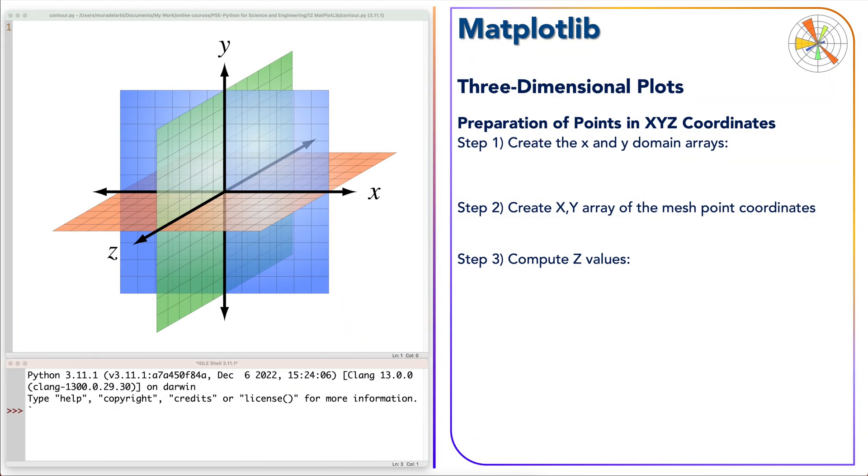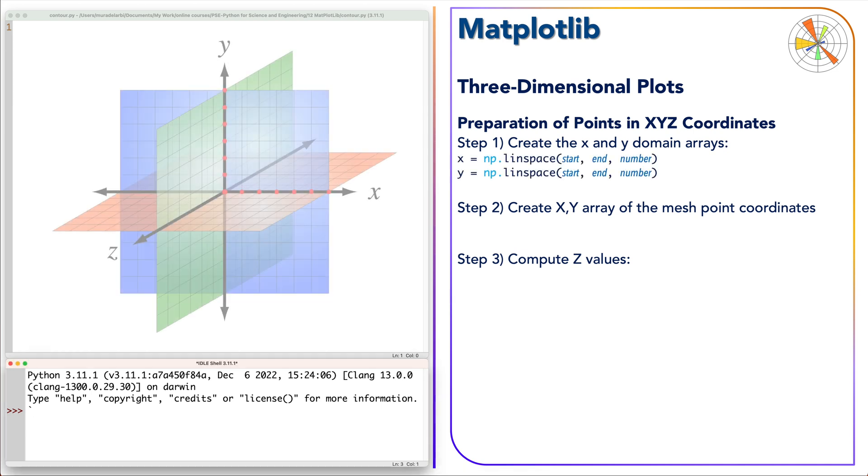Three-dimensional plots have an additional axis Z, as you see here. The Z points are not only found on the XY axis but also over the whole area of the XY plane. This means that the values of Z are calculated for every point in this area. For this reason, it is not enough to define XY points as in 2D plots. The XYZ points for a three-dimensional plot should be prepared in the following three steps.